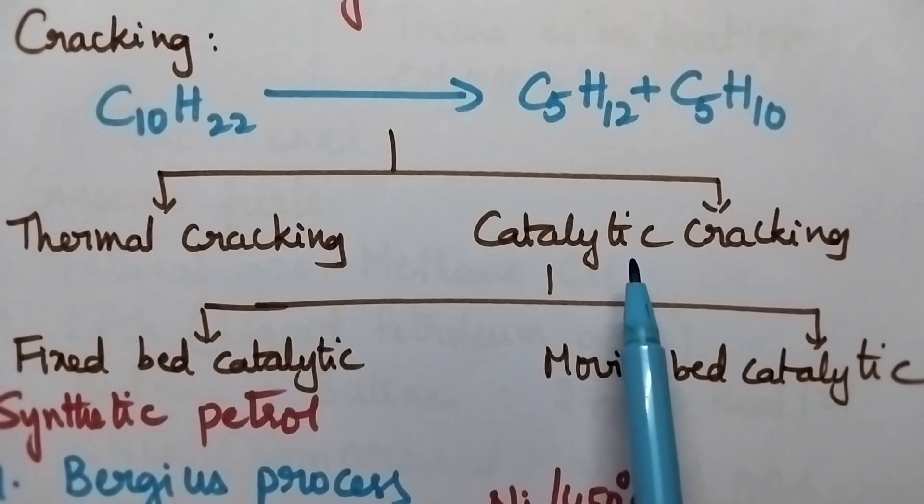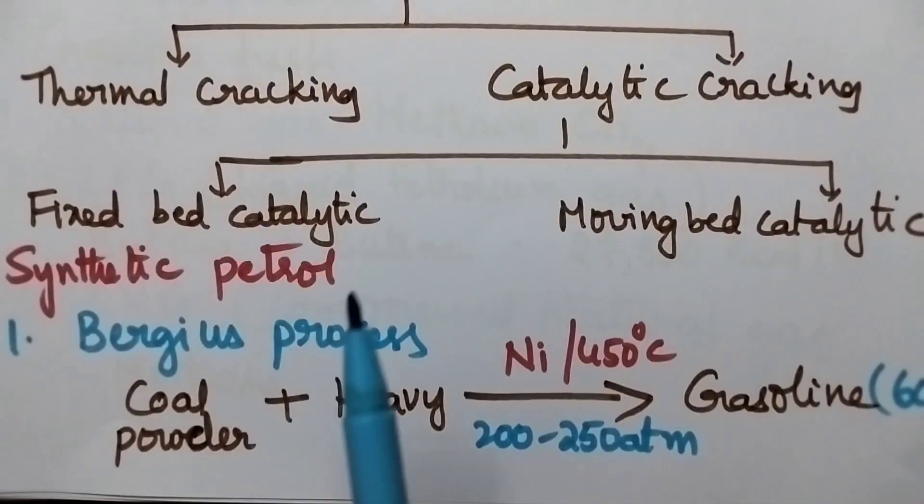Again, catalytic cracking is classified into two types: fixed bed catalytic cracking and moving bed catalytic cracking. Through cracking, 50% petrol can be obtained.